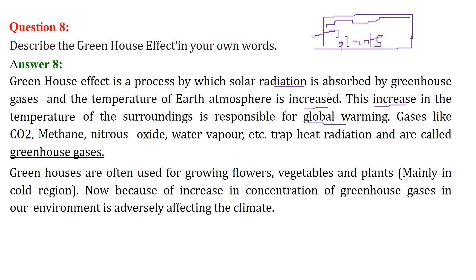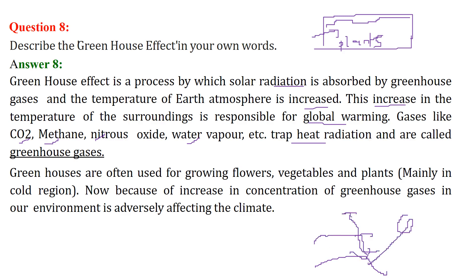This increase in temperature of the surroundings is responsible for global warming. Gases like CO2, methane, nitrous oxide, and water vapor all trap heat radiation. The sun gives us heat, and these gases trap this heat — they don't allow it to go out. When the Earth heats up, the glaciers and ice will melt.